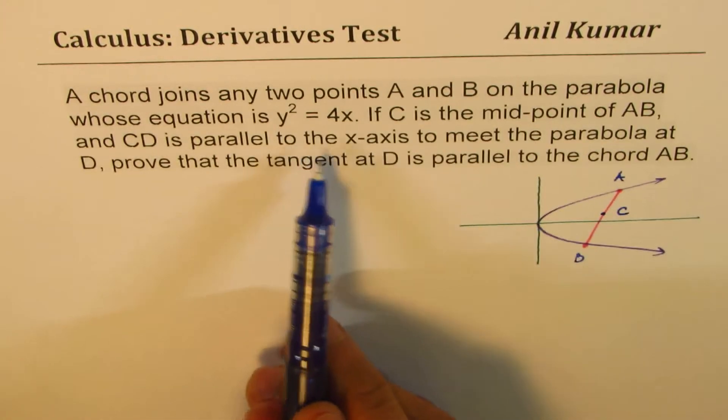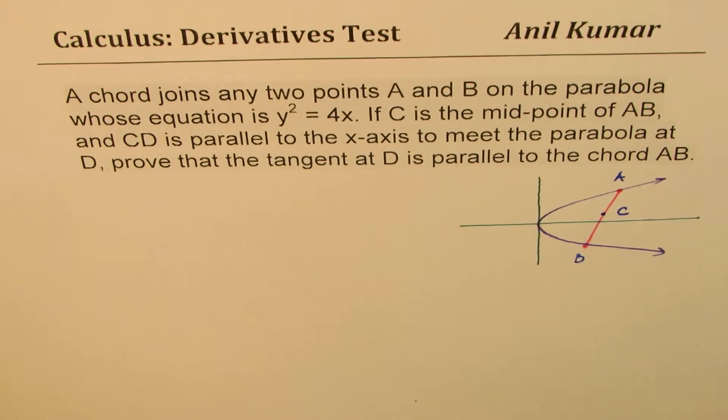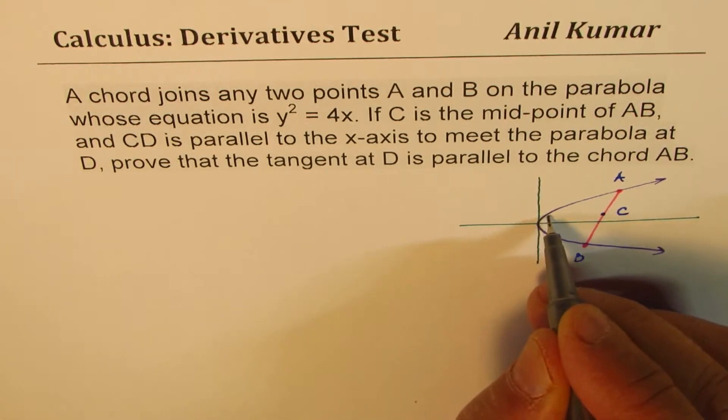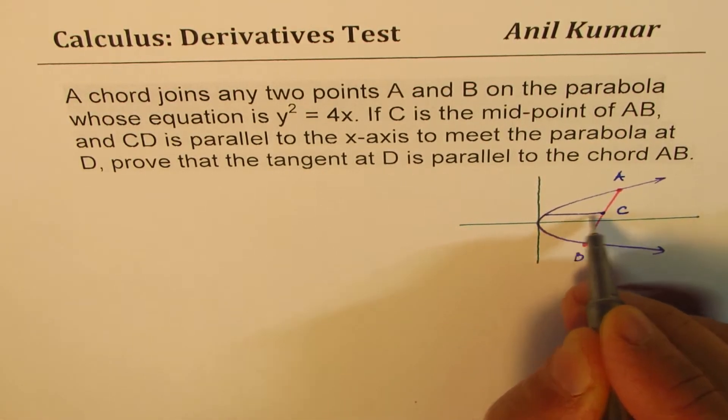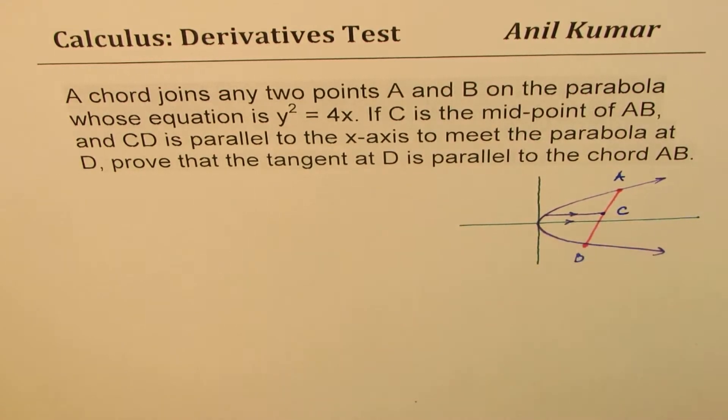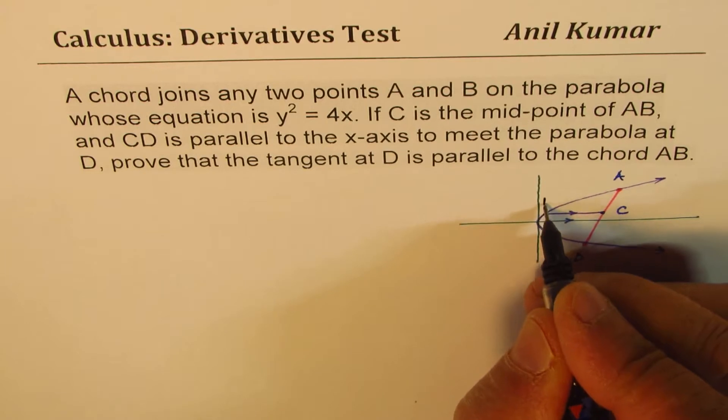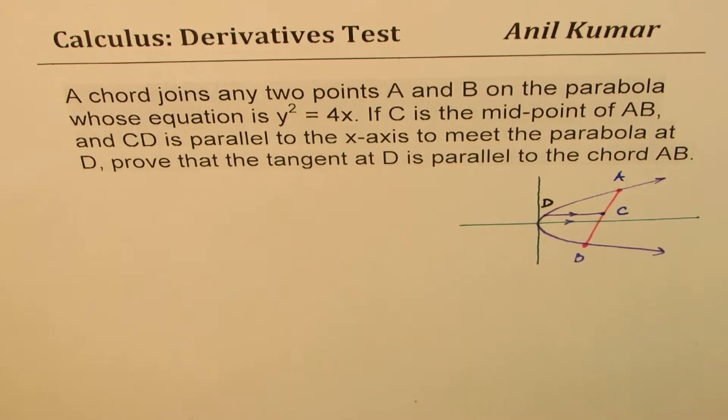Now CD is parallel to x-axis. So let me sketch a line which is parallel to x-axis. That line is parallel to x-axis. Now it intersects the curve at a point which is called D for us.